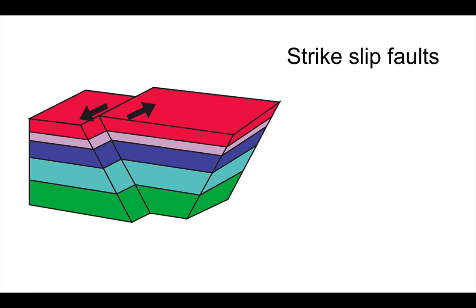This is a different type of fault. You can see from the block diagram that on this type of fault, called a strike-slip fault, we only have horizontal movement. So the slip, or the movement of the fault, is along the strike of the fault plane. This creates a very different type of fault.